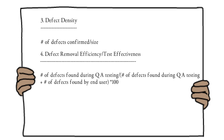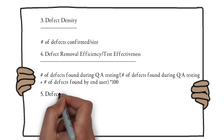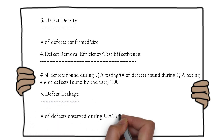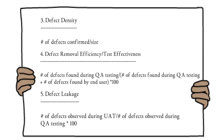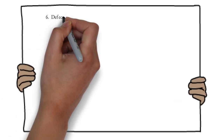The formula for defect removal efficiency is: (number of defects found during QA testing / total defects) × 100. The next metric is defect leakage, which helps find the number of defects that leaked to the next phase — for example, from system/integration testing into UAT testing. This metric helps understand how many defects slipped through to the next phase.